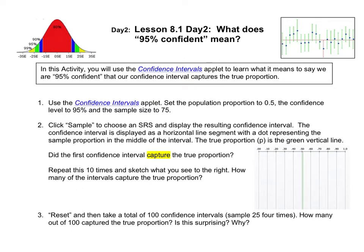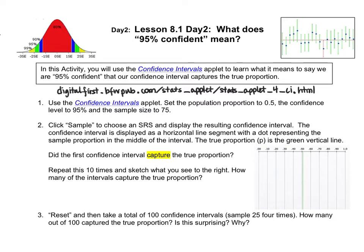We're going to be using an applet. The link can be found on Canvas, or if you need to type it in directly, I've written it in for you. The population proportion is going to be preset when you get there to 0.5. You're going to make sure that the confidence level shows 95%, and the sample size you're going to slide over to 75. Next, you're going to click on the sample button.